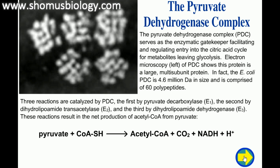In an electron microscopic image, the E. coli pyruvate dehydrogenase complex is 4.6 million Daltons in size and is comprised of 60 polypeptide sequences. This gives you a glimpse of how complex the eukaryotic pyruvate dehydrogenase complex is going to be.